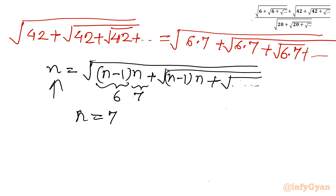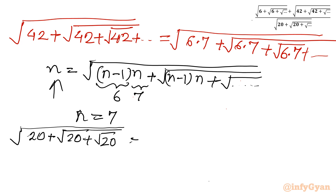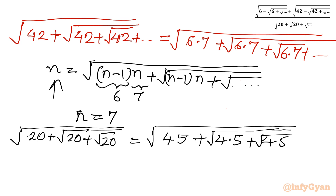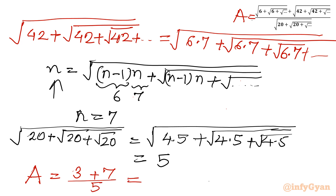For the denominator, we write square root of 20 plus square root of 20 up to infinity. The factorization of 20 is 4 times 5, so we have square root of 4 times 5 plus square root of 4 times 5 and so on. The largest successive factor n equals 5. So ultimately, the expression a equals 3 plus 7 over 5, which equals 10 over 5, giving the answer 2.